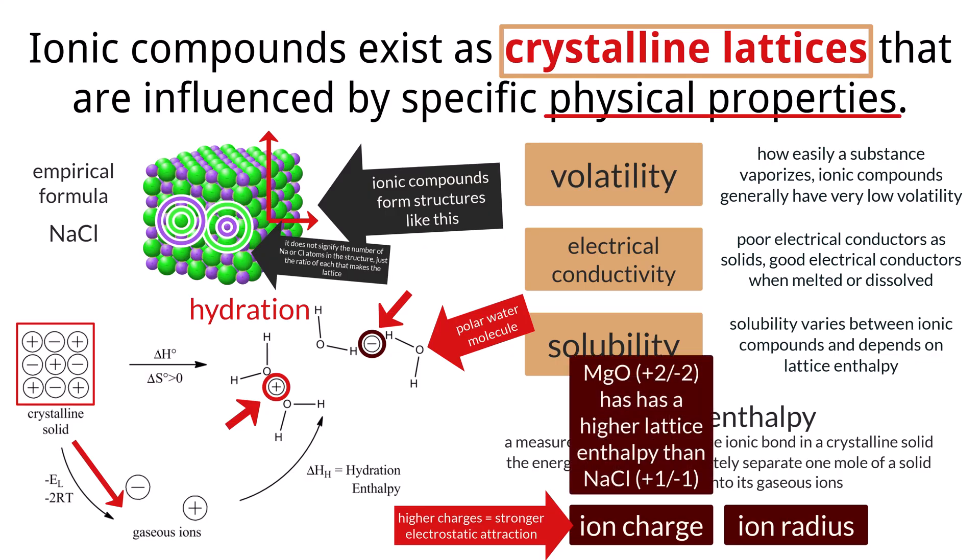For example, magnesium oxide, MgO, with doubly charged ions, Mg2+ and O2-, has a much higher lattice enthalpy than sodium chloride, NaCl, with singly charged ions, Na+ and Cl-.